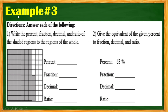Let's proceed to example number 3. Direction: write the percent, fraction, decimal, and ratio of the shaded region to the region of the whole. Counting the shaded regions: 1, 2, 3, 4, 5, 6, 7, 8, 9, 10 — and continuing — 10, 20, 30, 40, 50, 60, 70 — plus 1, 2, 3, 4, 5 — so we have 75 percent.